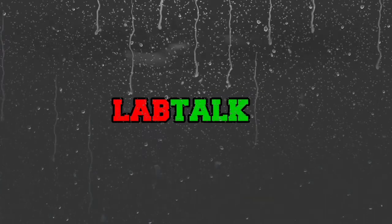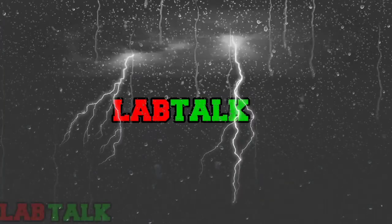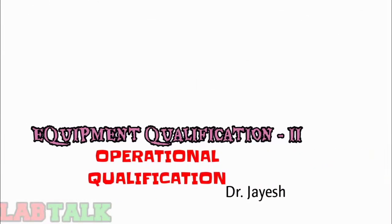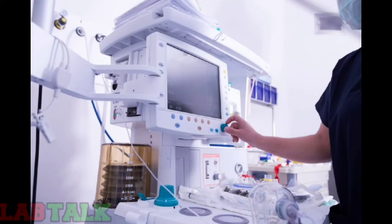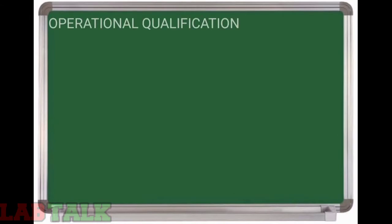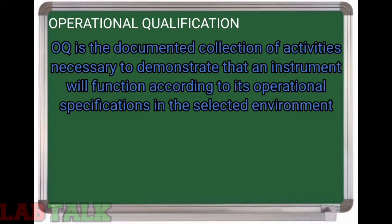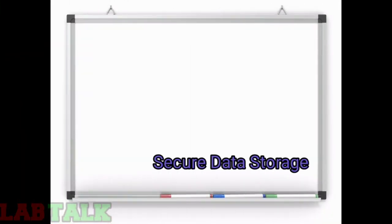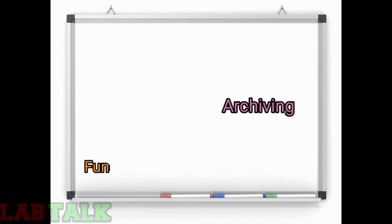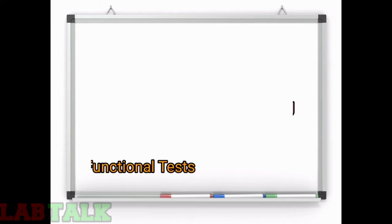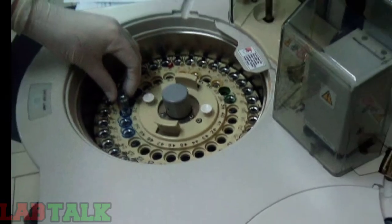Hello friends, welcome to LapBot. This is the second video in the series of equipment qualification. Coming to OQ, or the operational qualification — after successful IQ (installation qualification), the instrument is ready for operational qualification. OQ is the documented collection of activities necessary to demonstrate that an instrument will function according to its application in the selected environment. This documentation includes secure data storage, backup, archiving, and functional tests. The vendor or user must perform this qualification.